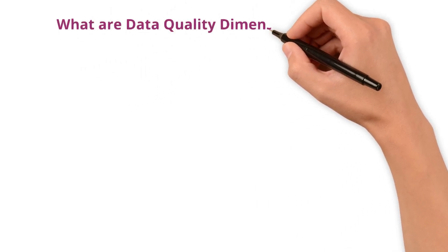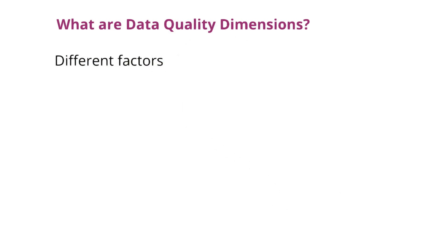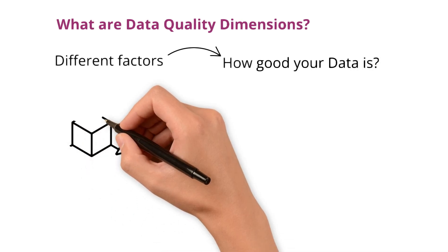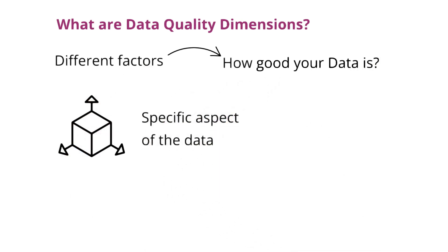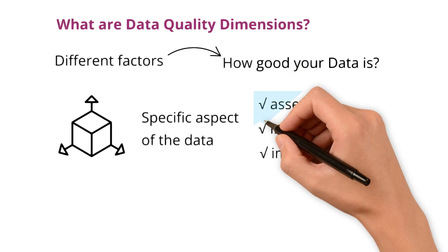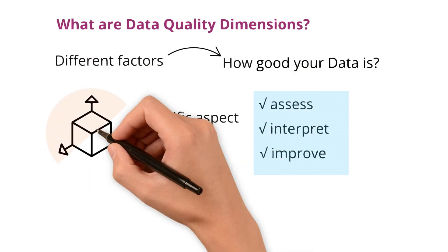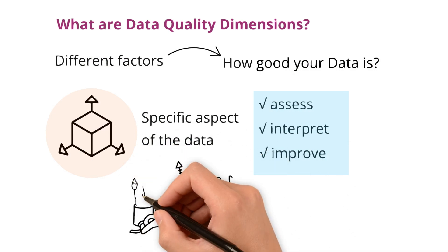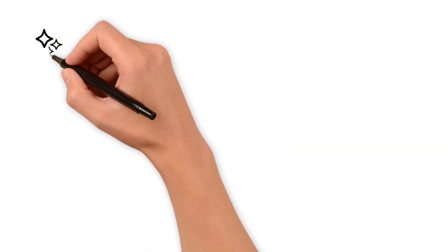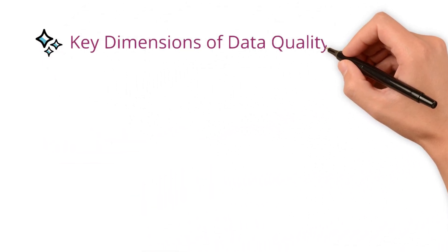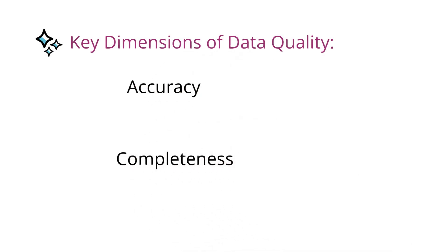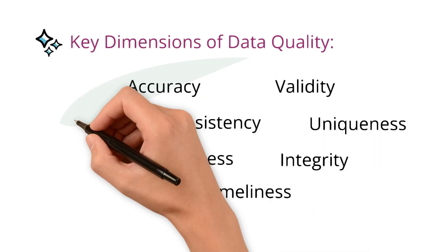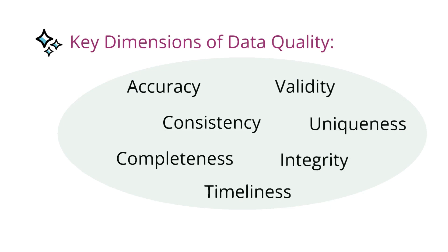Various data quality dimensions help you focus on the important details for your specific needs. So, what are data quality dimensions? They are the different factors that help measure how good your data is. Each dimension looks at a specific aspect of the data and you can assess, interpret and improve them individually. When you put these dimensions together, they give you a better overall picture of how suitable your data is for its intended purpose. Let's see the key dimensions of data quality: accuracy, completeness, consistency, validity, uniqueness, integrity and timeliness.